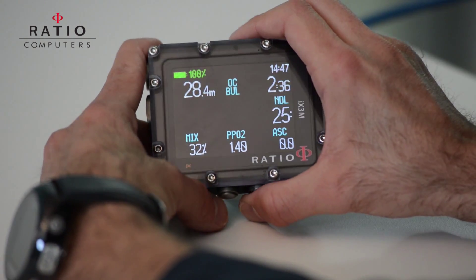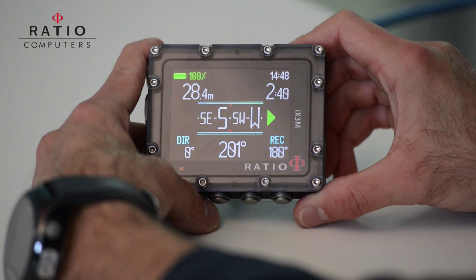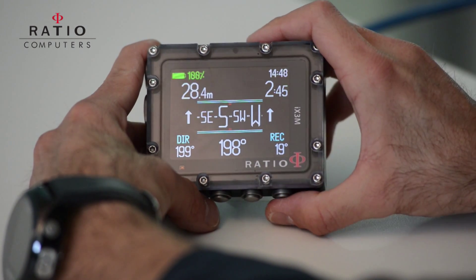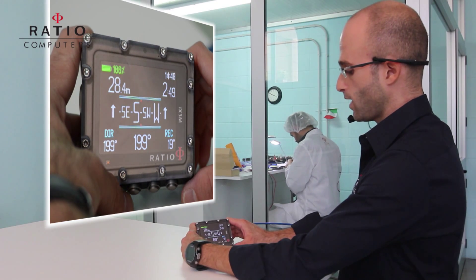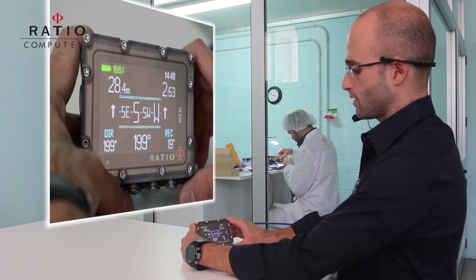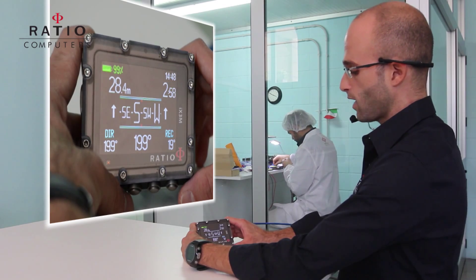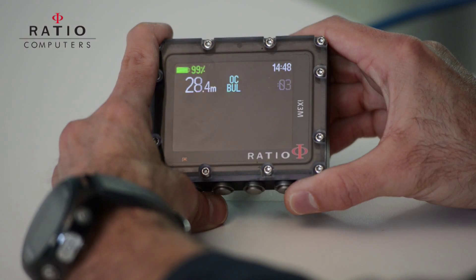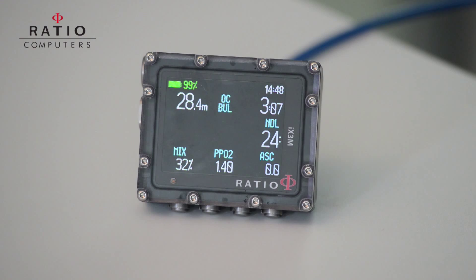If we want to navigate, we also have access to our compass. In the compass you can set up the direction that you want to follow, and the computer will automatically calculate the reciprocal. Once you are outside the main direction, the computer will signal you with green arrows showing how to go back to your main direction. The compass is still calibrated up to 85 degrees.